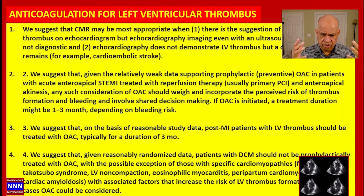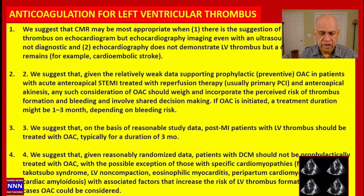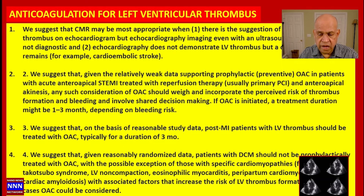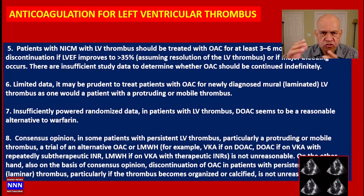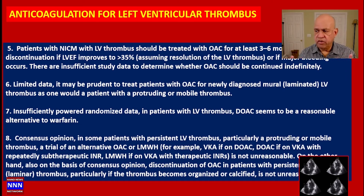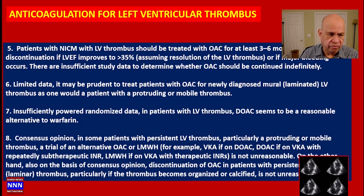Regarding dilated cardiomyopathy: dilated cardiomyopathy alone should not be an indication for oral anticoagulation therapy, except if these patients have associated atrial fibrillation or if there is evidence of left ventricular thrombus. Patients with non-ischemic cardiomyopathy with LV thrombus should be treated with anticoagulation for three to six months — the same approach as for ischemic events with dyskinetic segments. There is no evidence to suggest these patients need continuous long-term anticoagulation.